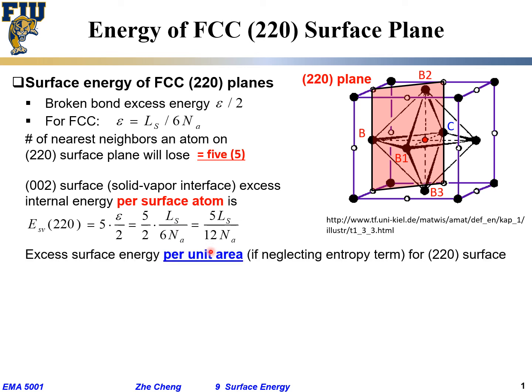And then similarly, the excess energy, also called surface energy per unit area - always go from per atom, now go to per area. Per area would be per atom times how many atoms per area.